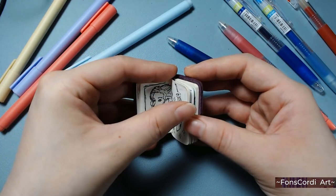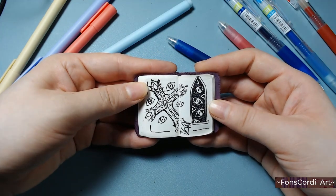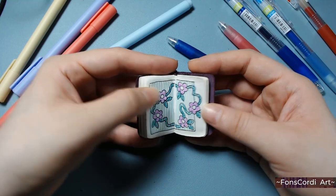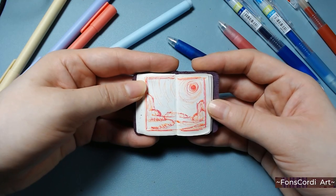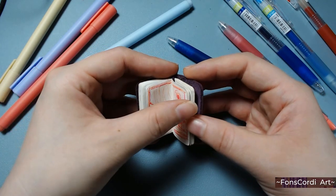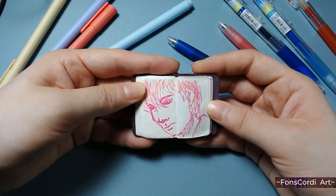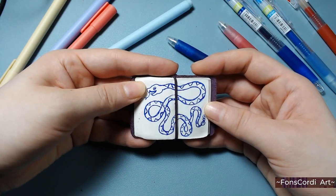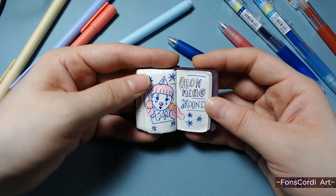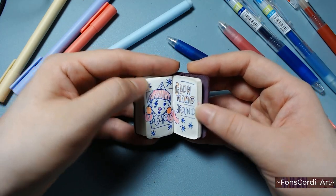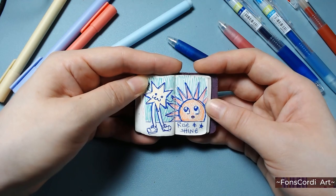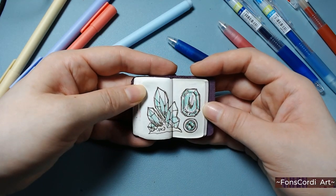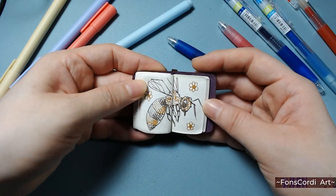The only bad thing, well it's a good and a bad thing, is the fact you need to be more precise with your lines because there's only one opacity. If you mess up, you mess up. There's no eraser or soft lines, so you need to be more conscious of what you're doing. In the big picture, that is a good thing. It helps you to develop more as an artist, but at the same time, if you're not ready for line commitment, you're in trouble.